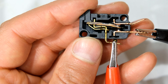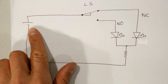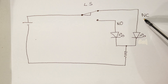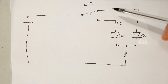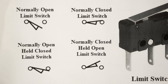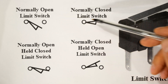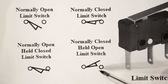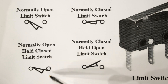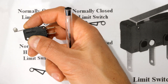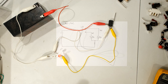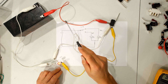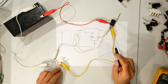When I release pressure the normally closed returns to closed circuit and the normally open returns to open circuit. I now have a little circuit: there's my battery, and I've got two LEDs — one connected to the normally closed terminal of the limit switch and the other connected to the normally open side. These are the symbols for the normally open and normally closed limit switch for your reference. The battery's positive connects to the common input of the limit switch.